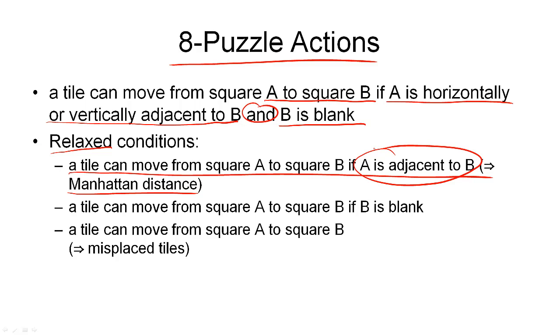If we drop the second part that B is blank, we end up with this heuristic here. That tells us a tile can move from square A to B if A is adjacent to B. What we get there is the Manhattan block distance heuristic, because we now allow a tile to be moved, no matter where it is moving to.